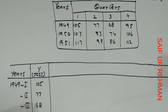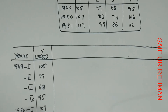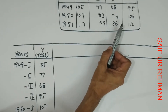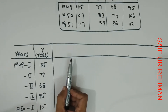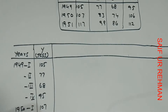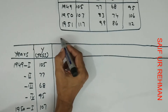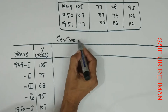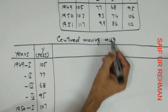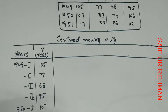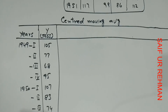First of all, what do we have to do? We have to find the seasonal indices, which requires us to work with the centered moving average. So first we will find the centered moving average, then we will calculate the ratio to moving average method to get the seasonal indices.